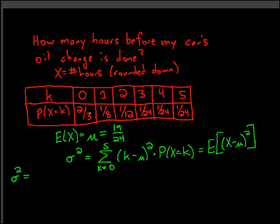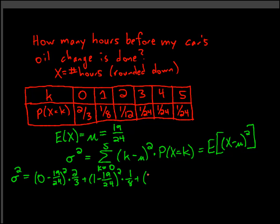I'll start off with k equals 0, and I do 0 minus the expectation, squared, and then multiply that by the probability. Then I add the same thing for k equals 1: 1 minus the expectation, square that difference, and multiply by the probability. Same thing for k equals 2, multiplied by the probability of getting 2 under this random variable.